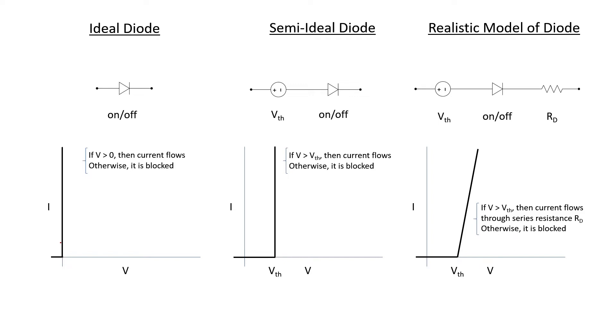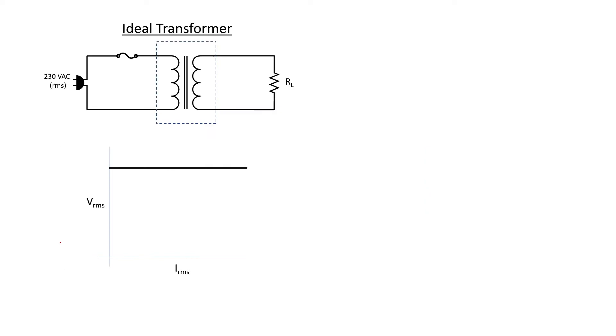Let's now take a look at the transformer. An ideal transformer will maintain the same output voltage irrespective of the current passing through the load. Of course, that's not what happens with normal transformers.